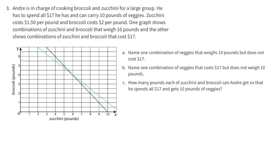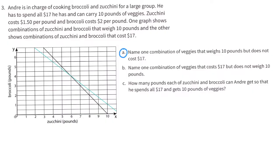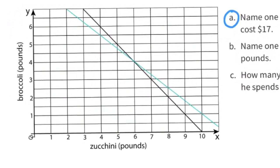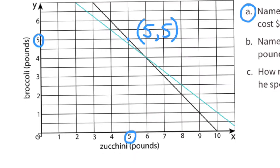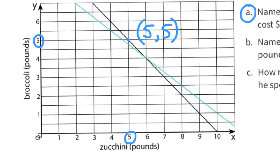Part A: Name one combination of veggies that weighs 10 pounds but does not cost $17. We're just looking for a point on the black graph that's not on the blue graph, because the black graph represents a combination of 10 pounds of zucchini and broccoli, and the blue graph represents $17 worth. I'll select the point that represents 5 pounds of zucchini and 5 pounds of broccoli — that's close to the blue line, but not on the blue line.